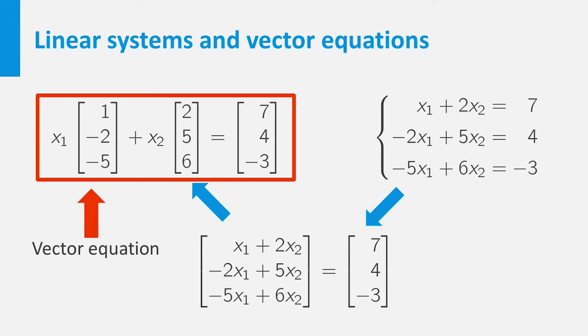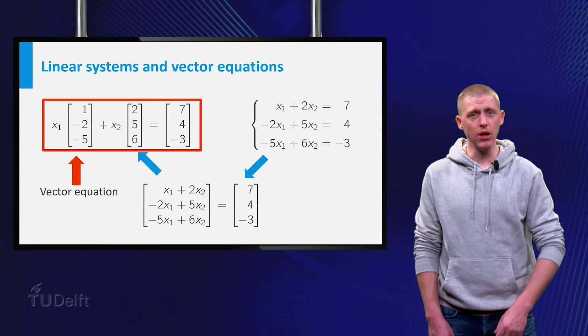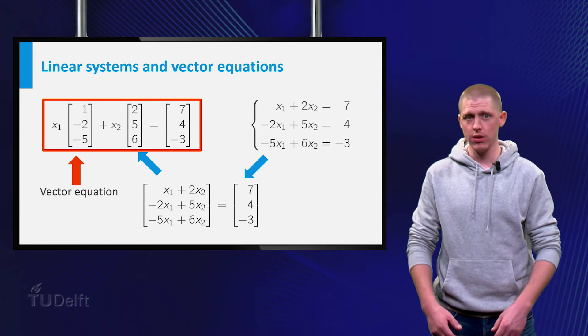The equation with the vectors on the left is an example of a vector equation, and you have seen that the linear system with three equations is equivalent to a vector equation with vectors from R3. Can you conclude the same for a linear system of more than three equations?